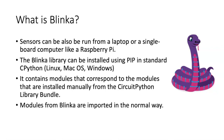Blinka can be installed using pip like any other typical CPython library, so you can use it with a regular CPython distribution on Linux — such as on a Raspberry Pi — or also on Mac and Windows. The modules included in Blinka correspond pretty much to the modules that you would install manually to a microcontroller board from the CircuitPython library bundle. If you want to use Blinka, you just install them in the normal way using pip.